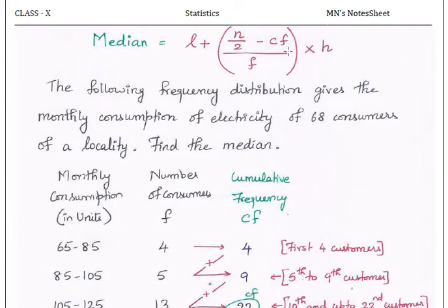Cf is cumulative frequency. In the cumulative frequency, you have to prepare a new column and then only find the data.